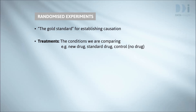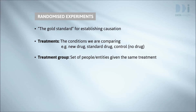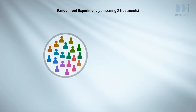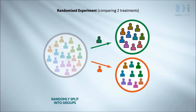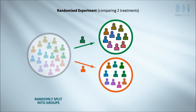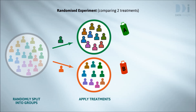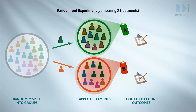To have a randomised experiment we have to be able to say who will get what treatment. The people or entities that receive a particular treatment are called a treatment group. Then we choose randomly who will be in each treatment group, apply the treatments, observe the outcomes, and compare the groups.